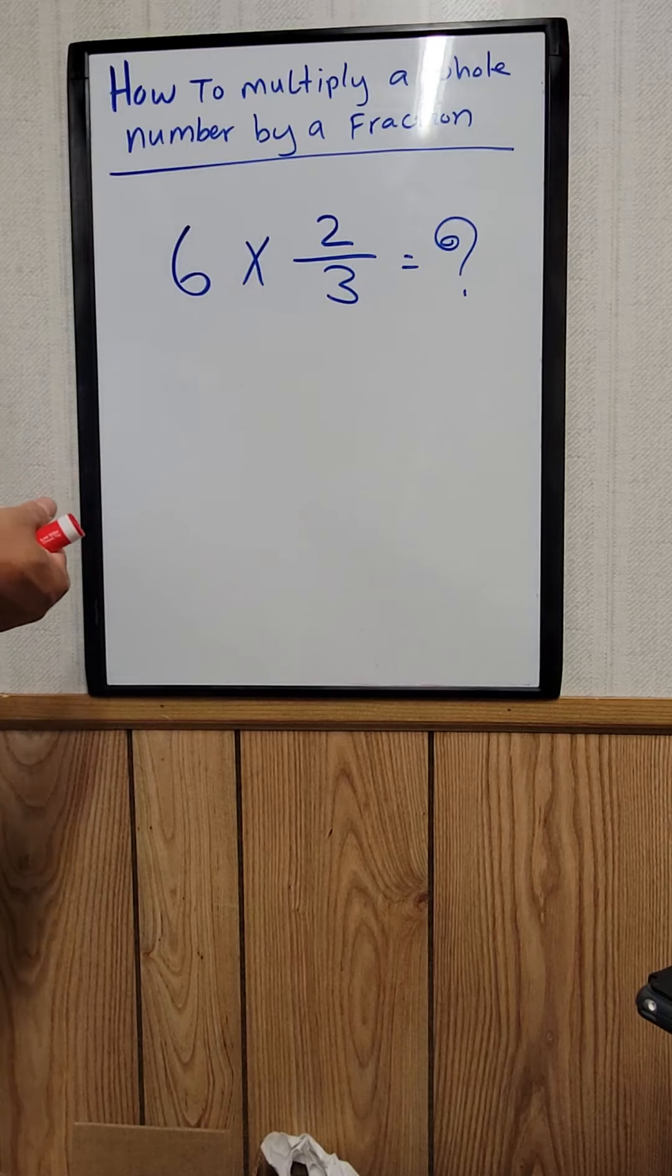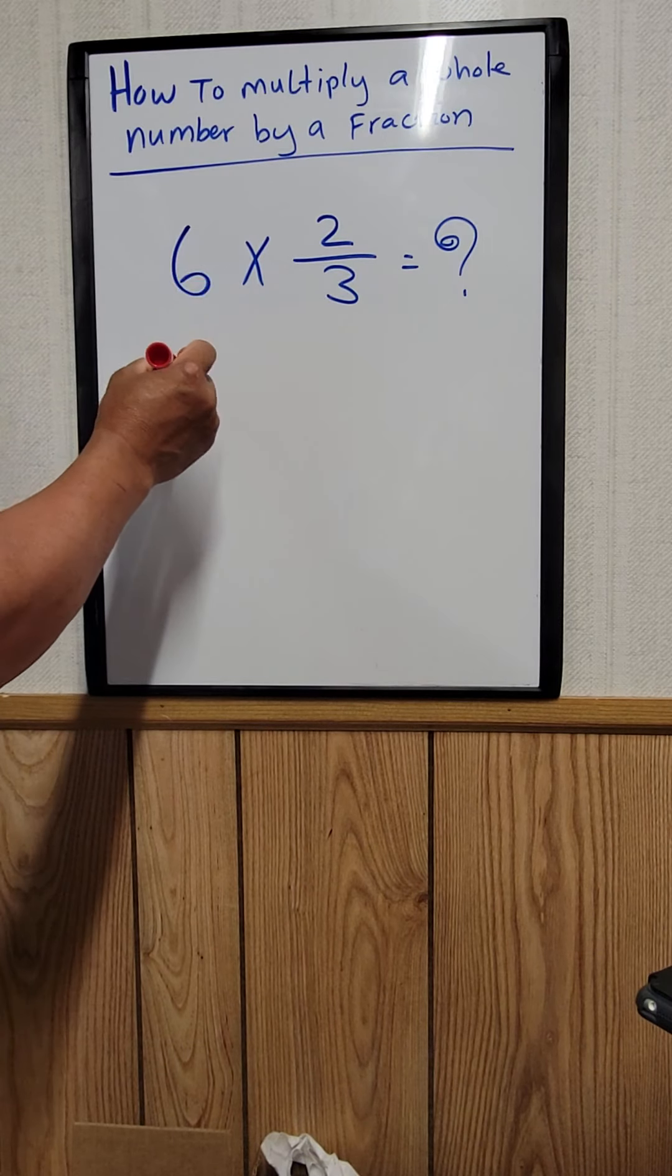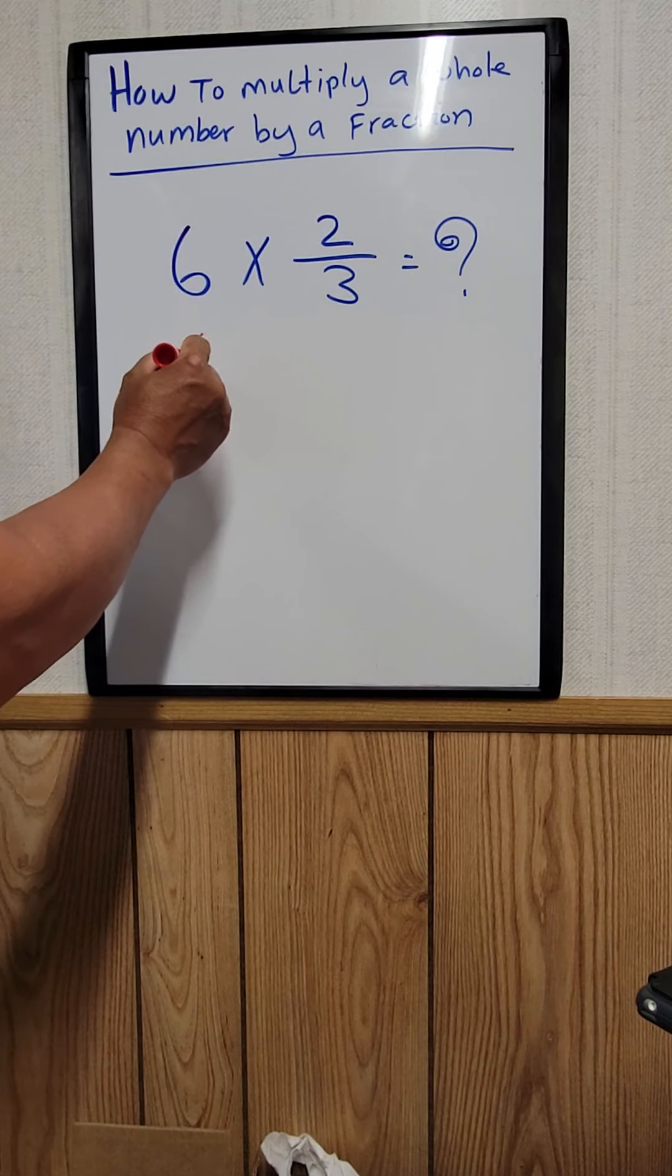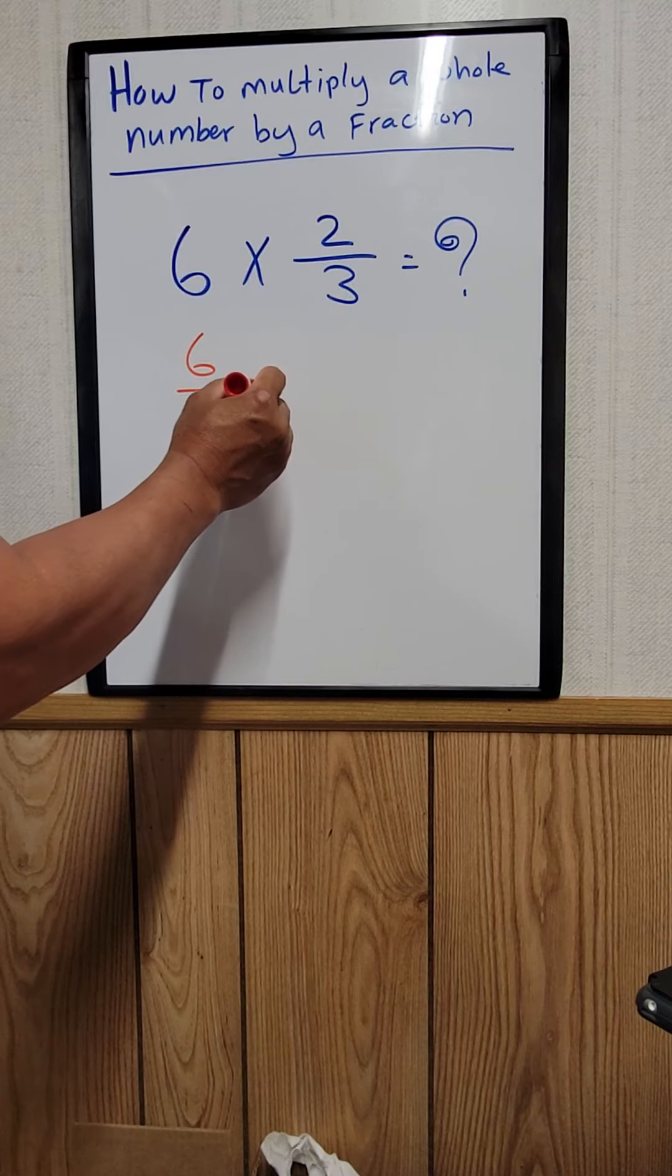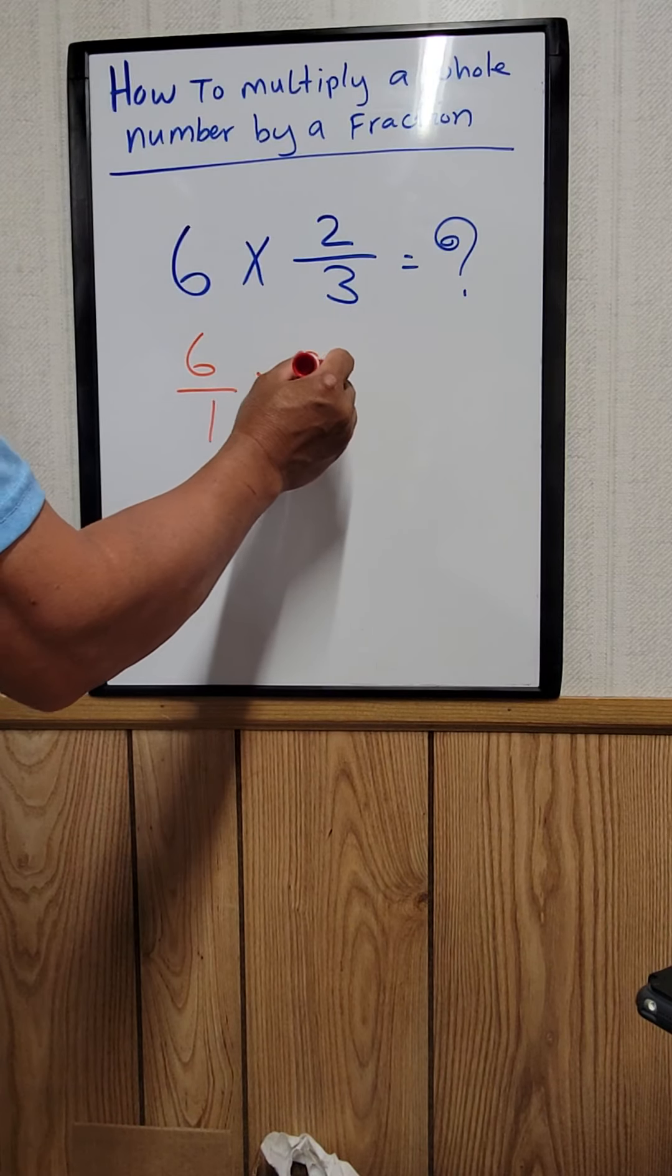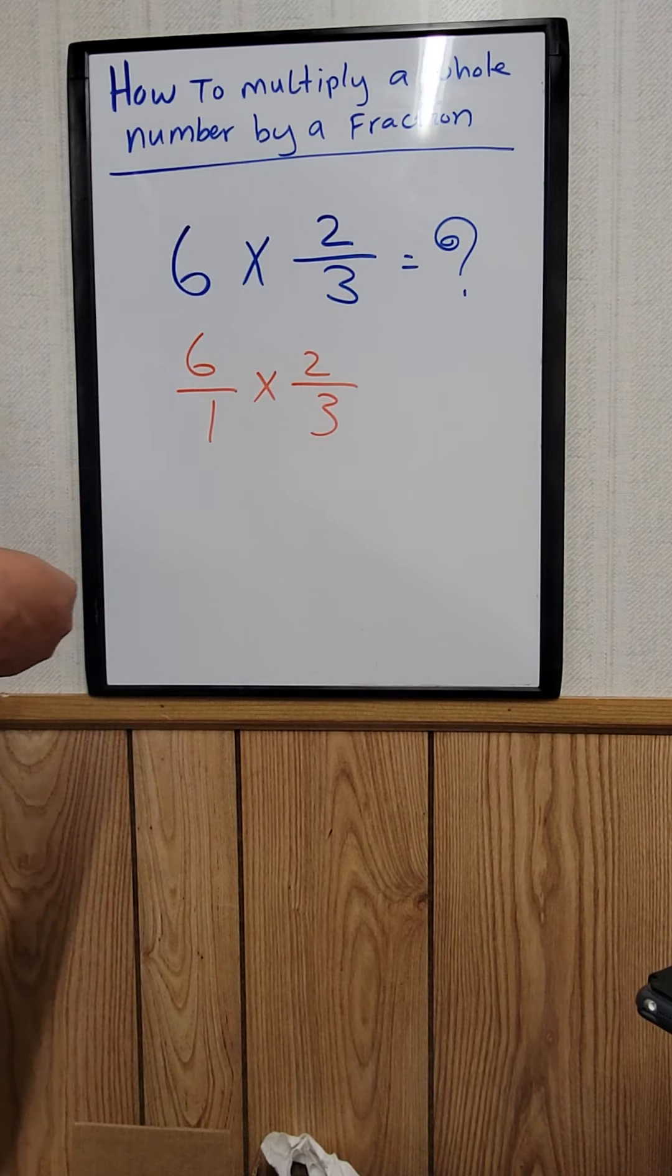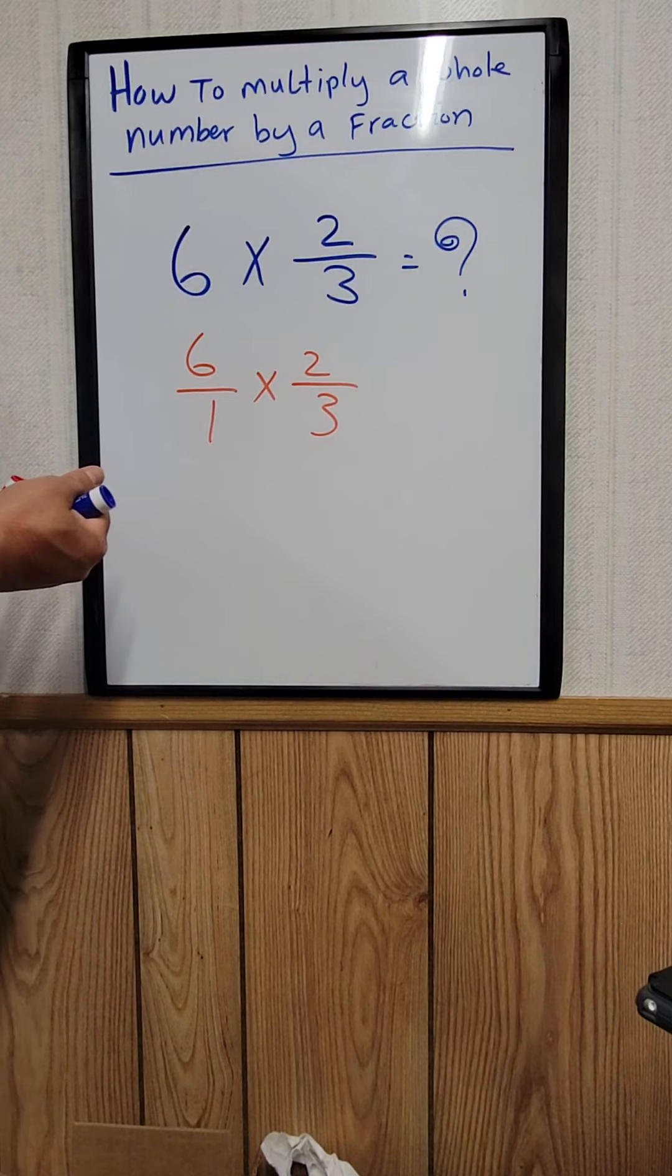So the first thing we need to do is rewrite this a little bit. 6 can be written as 6/1, and then times 2/3. Okay? Now we can use cross cancellation right here.